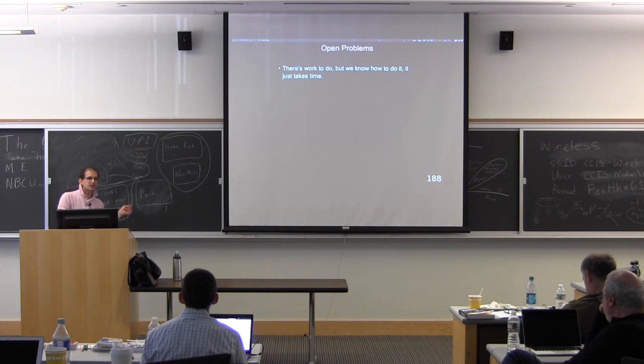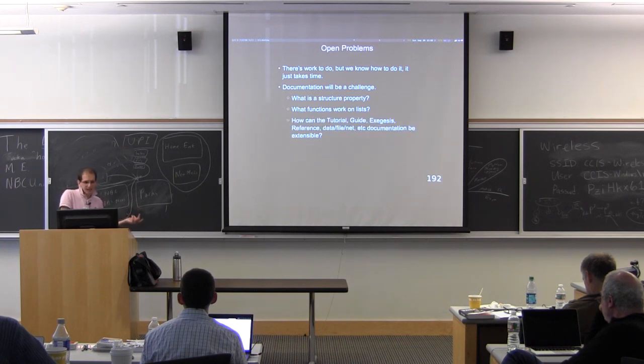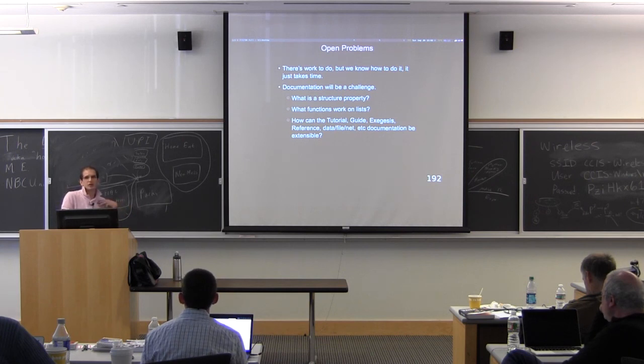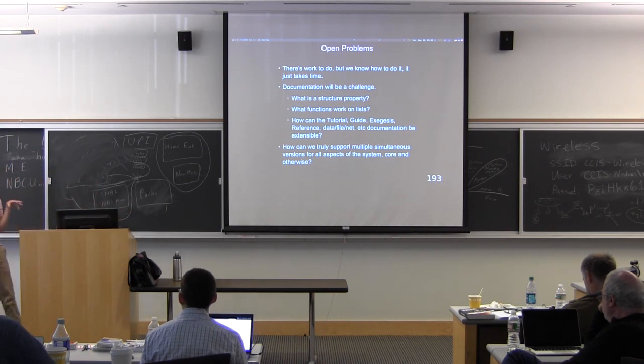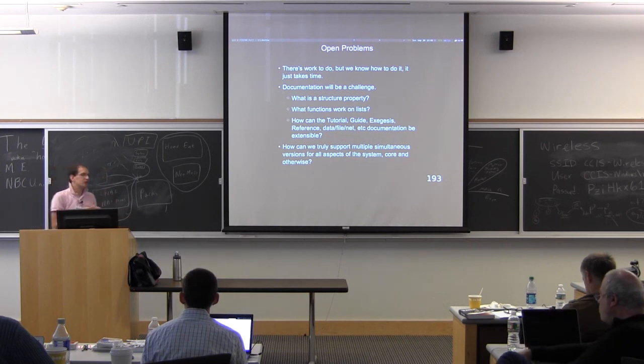The system has features to install many different kinds of collections of packages, which is complicated and a little bit beyond what's worth talking about in this setting. But there's interesting documentation about how this works. There are some open problems. There's just work that we need to do. But the more important open problems are how we deal with modular documentation. Stuff like how do you look at the documentation and say what are things that are structure properties? What are functions that work on lists? How can a package extend the tutorial or the guide or the reference or add a new piece to the data manual? These sorts of things. We don't have a solution for this. This is one of the things that we need to discover as a community how to do. And finally, there is definitely a desire for multiple simultaneous versions for all aspects of the system, not just user packages, so the core as well. So that's an open problem and I don't think anybody knows a solution to that. And until we have something that we can all work with, we don't want to do a half-baked solution. So that's all. Please, questions?